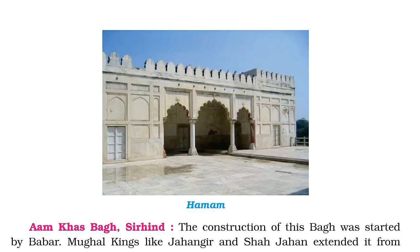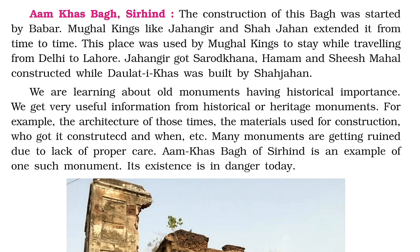Here you can see the picture of Hammam, Aam Khas Bagh, Sirhind. The construction of this park was started by Babar. Mughal kings like Jahangir and Shah Jahan extended it from time to time. This place was used by Mughal kings to stay while traveling from Delhi to Lahore. Jahangir got Shrood Khana, Hammam, and Shish Mahal constructed, while the Daras was built by Shah Jahan.